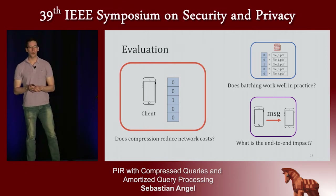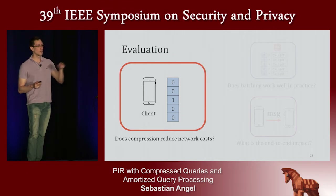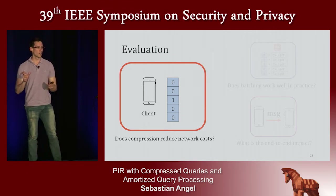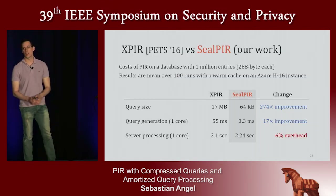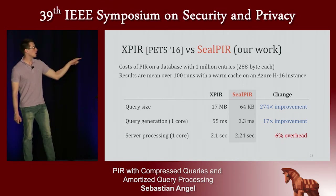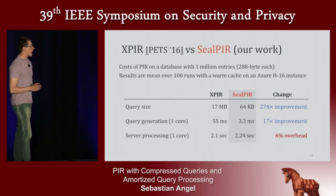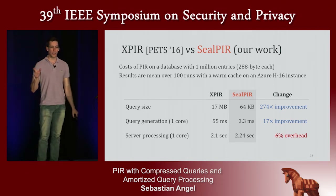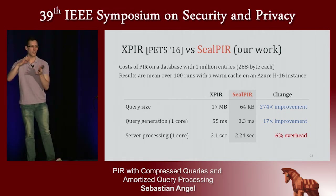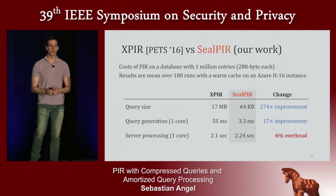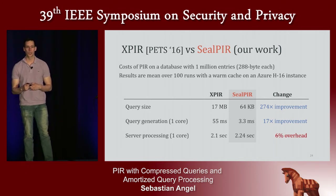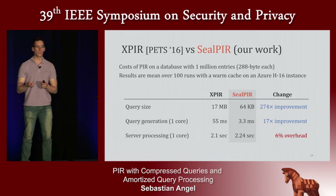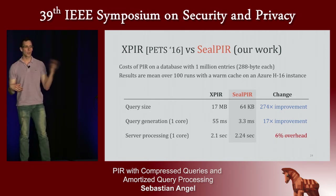We also evaluated the Pung system and saw significant improvements. Here is a comparison with XPIR for running a single PIR query on a database with one million entries, each entry being 288 bytes. We find that compression significantly reduces the network cost — the size of the query — by up to two orders of magnitude. This also reduces the computational cost for the client to generate the query, because in XPIR the client generates many encryptions of 0 and 1, whereas in CLPIR the client only generates and encrypts a single polynomial.